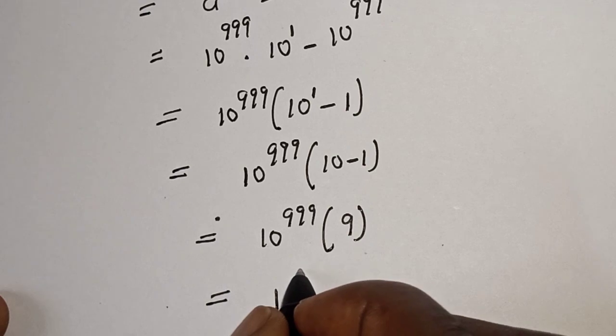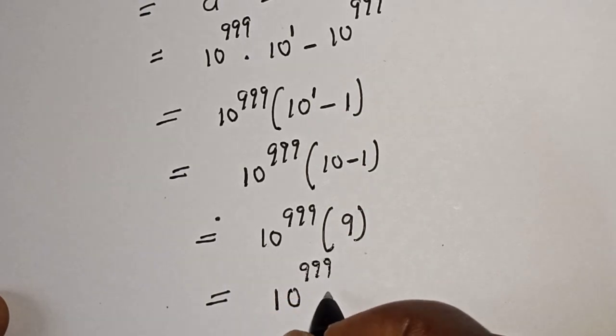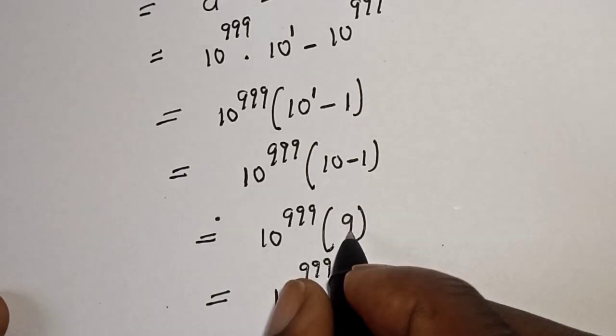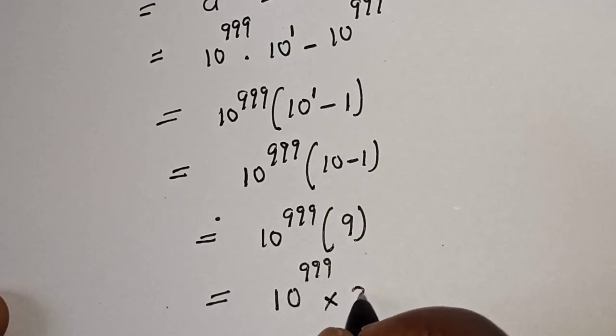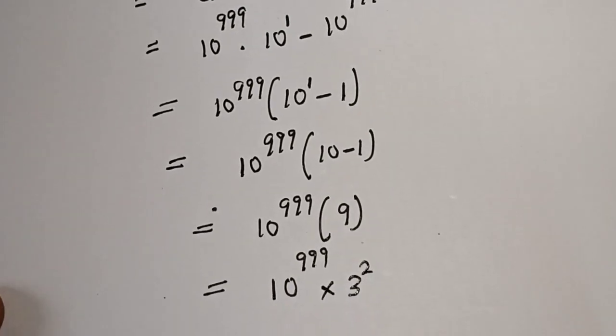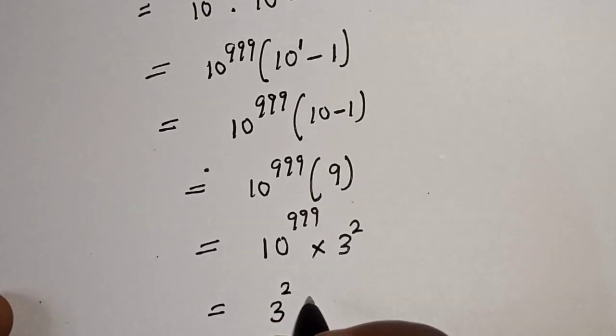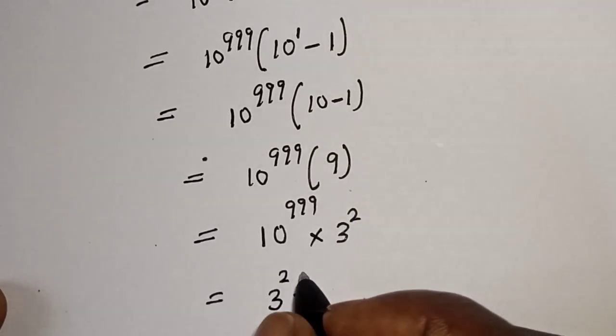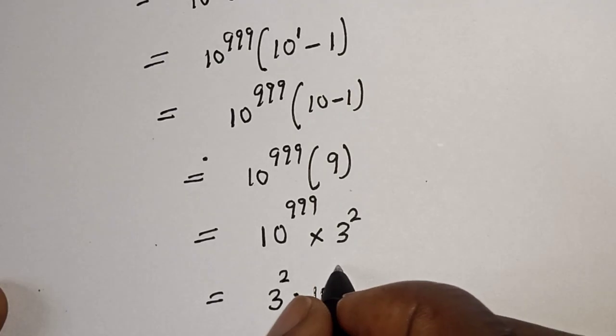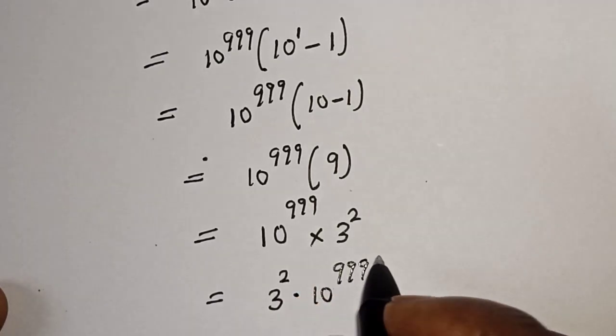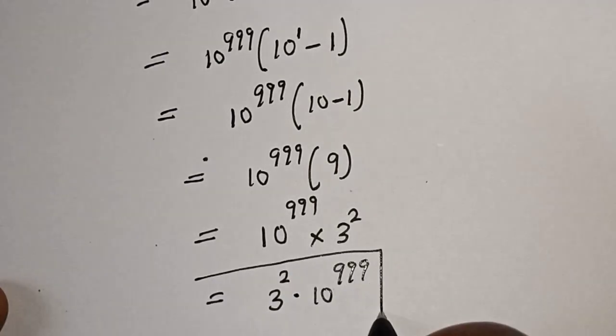9 can be written as 3 squared. Therefore we have 3 squared multiplied by 10 raised to power 999, and that is our final answer.